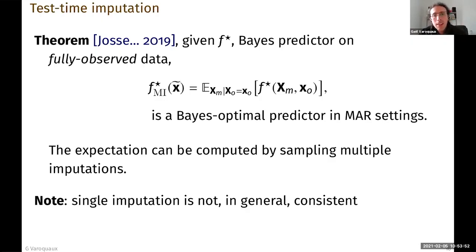And one comment is that in general, single imputation is not consistent. I can't take a Bayes predictor for fully observed data and convert it to a Bayes predictor for partially observed data with a single imputation.